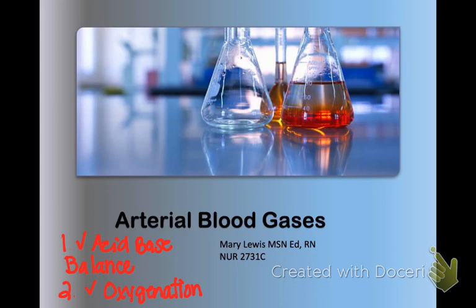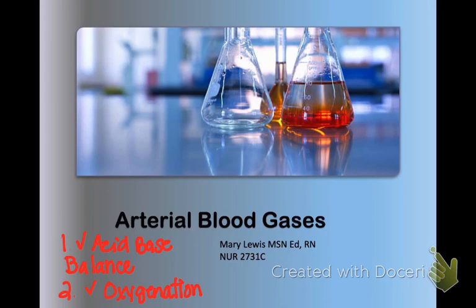There are a lot of health problems that lead to acid-base imbalances — diabetes, COPD, kidney disease. It's important to remember that acid-base imbalance is not a disease but a manifestation of an underlying health problem. That's why we talk about it in level four, because of the body compensating.